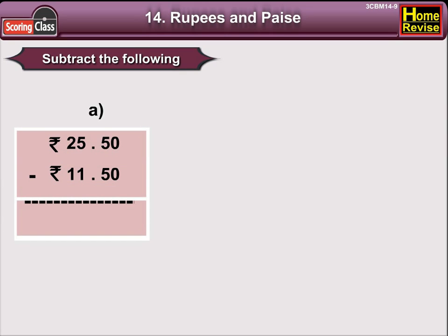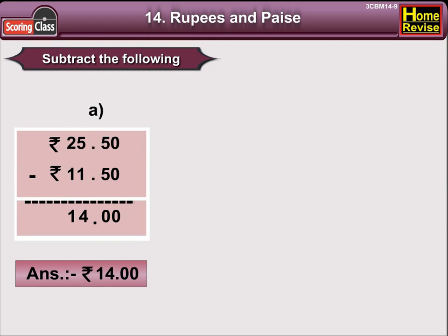Now, 0 minus 0 is 0. 5 minus 5 is 0. If you see the Rupees column, 5 minus 1 is 4, and 2 minus 1 is 1. So, the answer is Rupees 14.